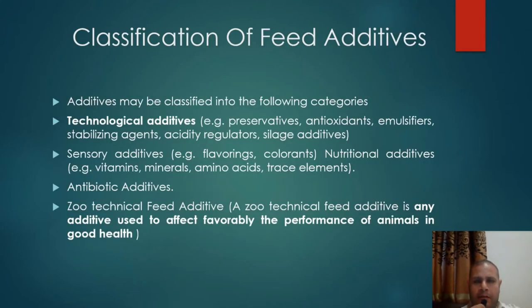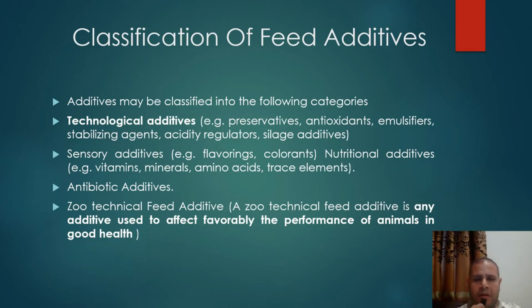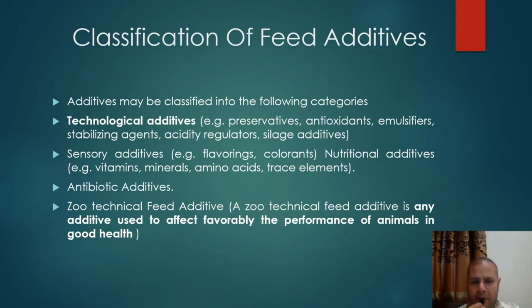Classification of feed additives: feed additives may be classified into the following categories. Number one: technological additives — for example, preservatives, antioxidants, emulsifiers, stabilizing agents, acidity regulators, and silage additives. Number two: sensory additives — for example, flavorings and colorants. Number three: nutritional additives — for example, vitamins, minerals, amino acids, and trace elements. Number four: antibiotic additives. And number five: zootechnical feed additives.